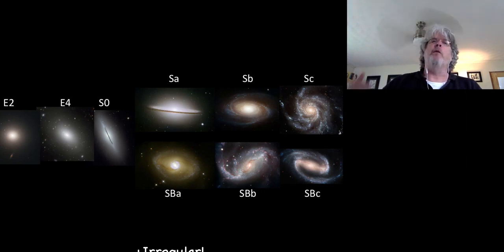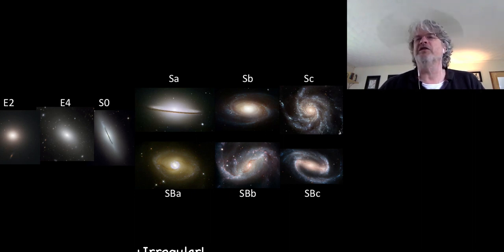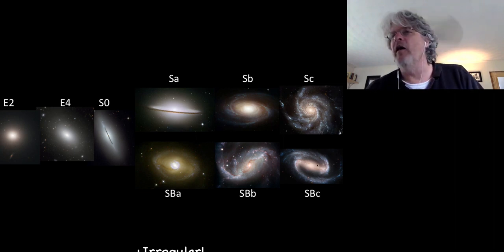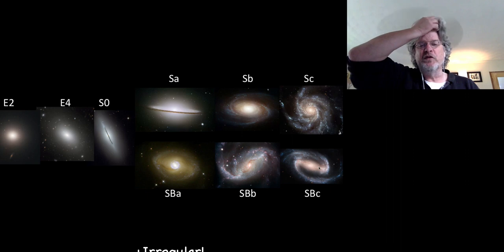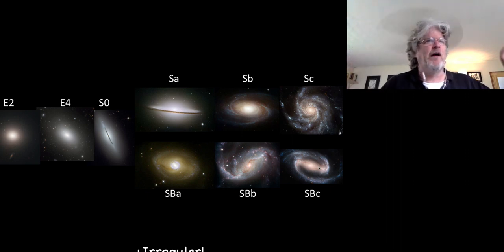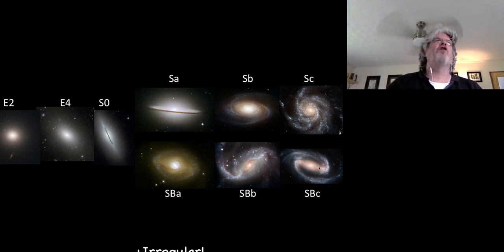To sum it up, Hubble originally came up with a sequence like this where you start with the ellipticals, basically the E0s, and you get basically flatter and flatter up to E7 or so. Then there's the lenticulars, the SOs, and then the spirals, which can be split up into spirals with normal bulges and spirals with elongated barred spirals. Hubble did sort of see it as an evolutionary sequence, but it's not. You can't go from a spiral to an elliptical, you can't go from an elliptical to a spiral. But it's still the way we talk about galaxies. If you talk about the Milky Way, it's like an SBB or maybe an SBC, it's definitely an SB-type galaxy.